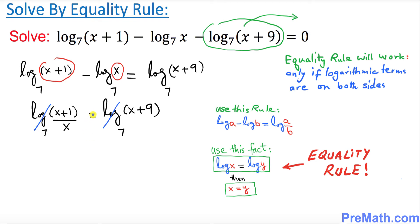Same thing, if I have the same logs on both sides, they both undo each other. So we simply end up with (x+1)/x = x+9. So far so good.